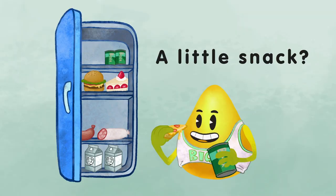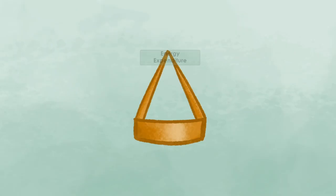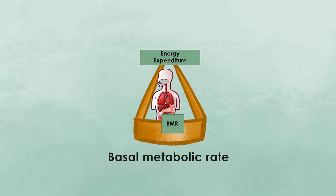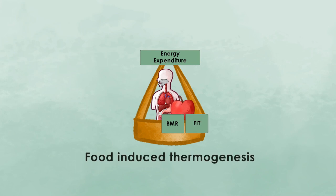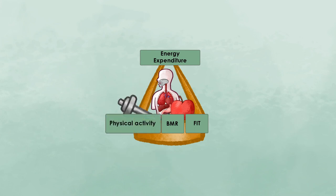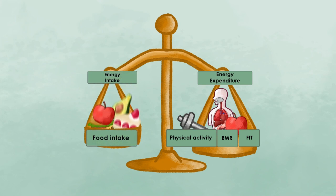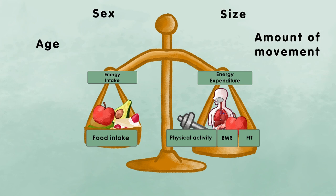In this context, we need to define some terms connected to energy expenditure. Basal metabolic rate refers to the amount of energy an individual uses to maintain essential body functions, such as respiration, circulation, and digestion. Total energy expenditure also includes food-induced thermogenesis and energy that we use as a result of physical activity. Based on that, our daily calorie intake should be calculated, but this is also dependent on our age, sex, size, and of course on how much we move.